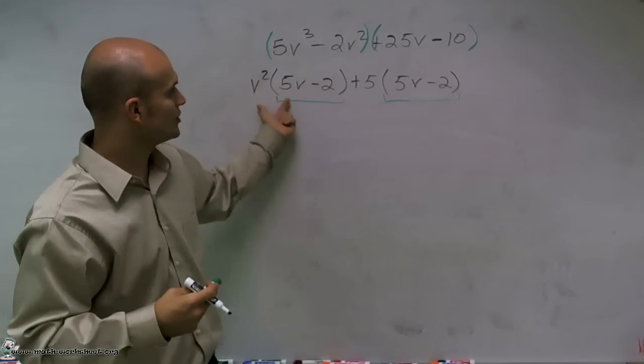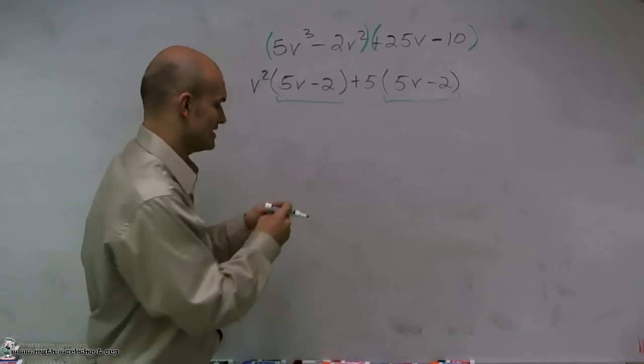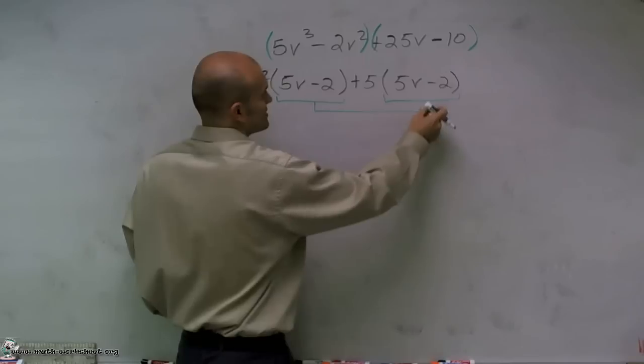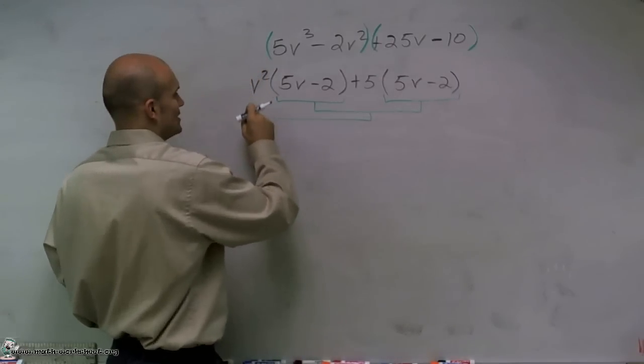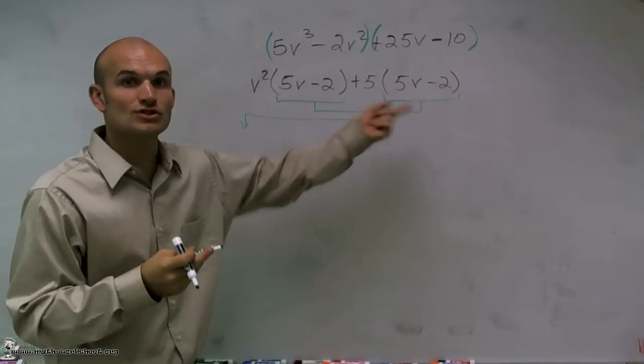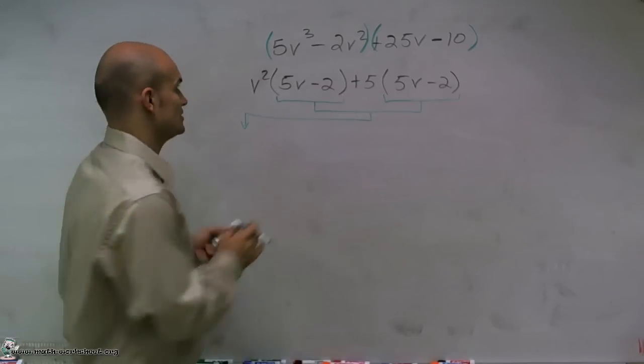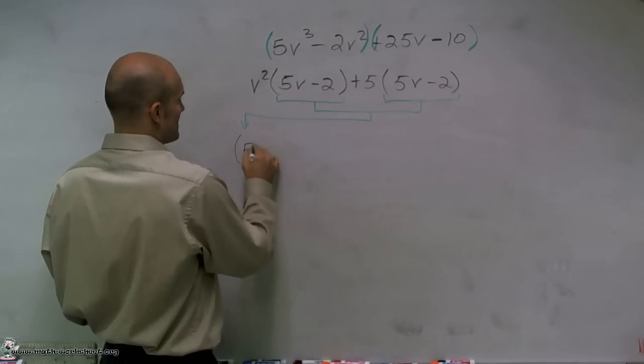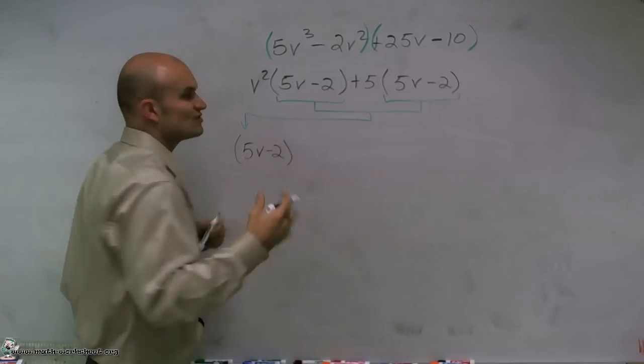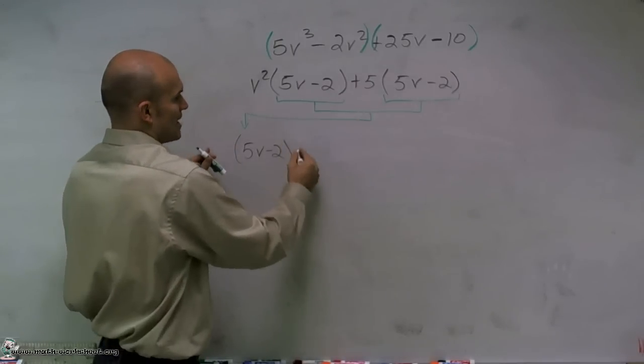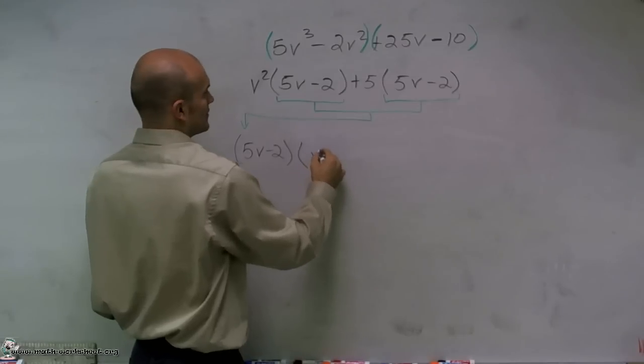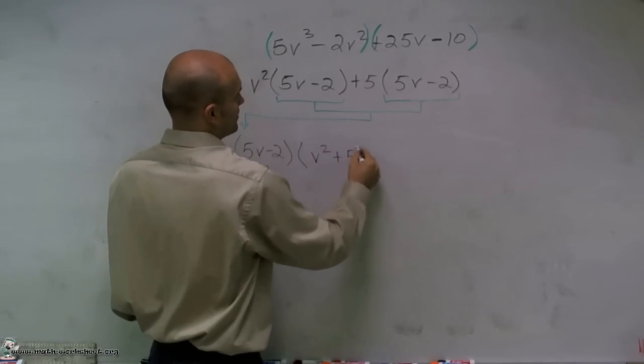Now what I'm going to do is look at this expression, and I notice that these are exactly the same. So I can factor those two terms out of the whole expression to leave me 5V minus 2. So since it's redundant and we've done it over again, we can factor them out, and I'll just be left with V squared plus 5.